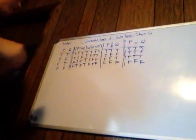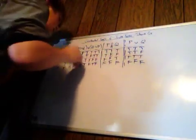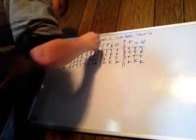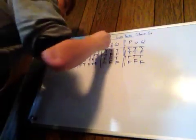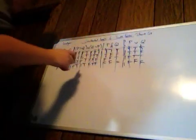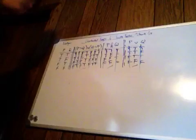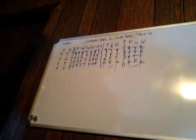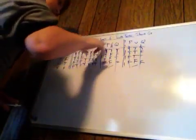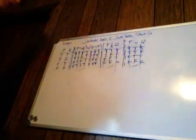Now we're going to eliminate the rows we no longer need. We are concerned about this row, this row, and this row — because if we have a row with T, T, then an F, we know that the argument is invalid.